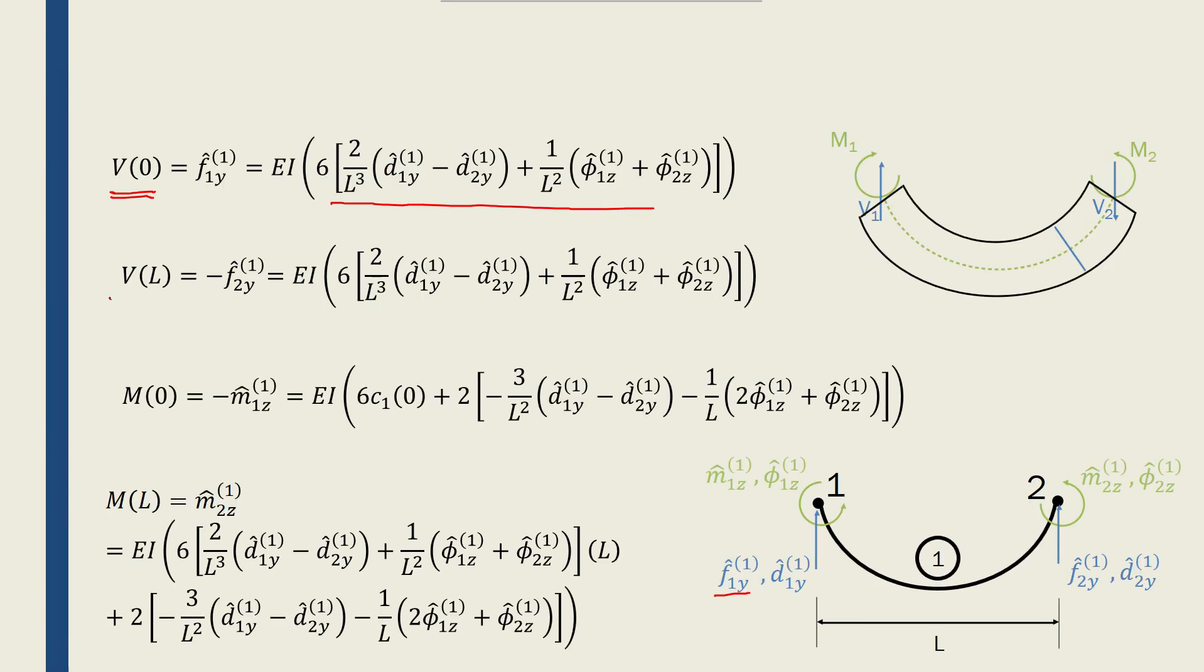And V(L) is equal to minus f2y. And that's because f2y is in that direction, in the positive y direction, whereas V is in the negative direction. That's why we put that negative sign there, and what that means is that negative f2y is equal to EI times 6c1.